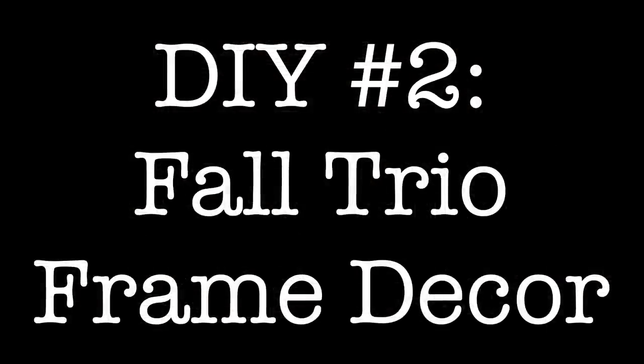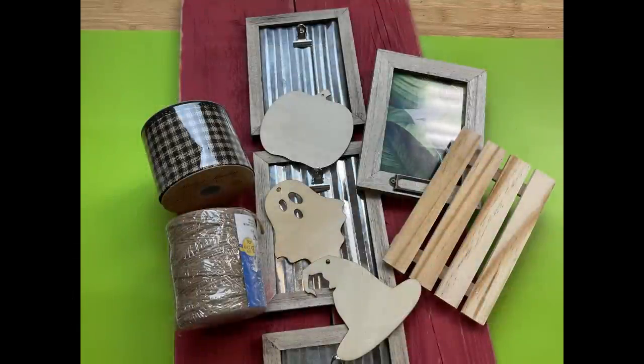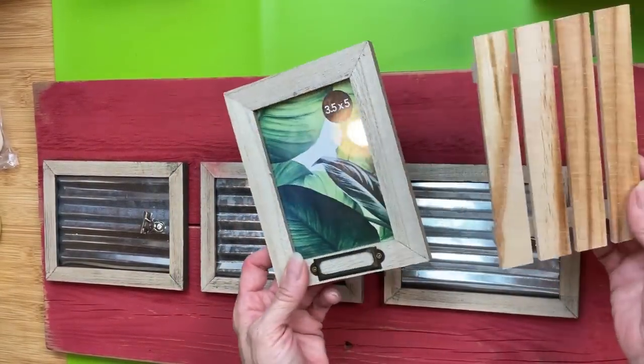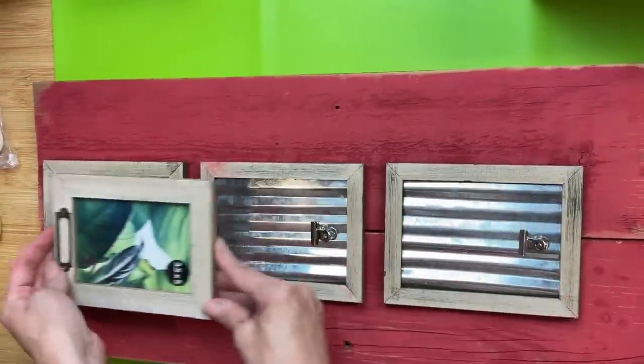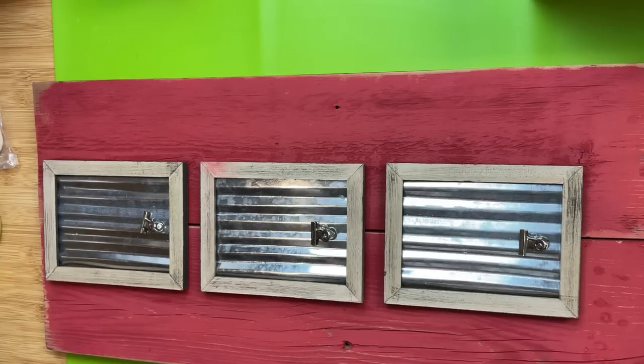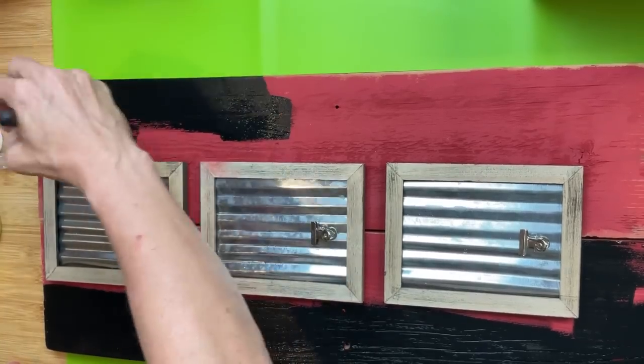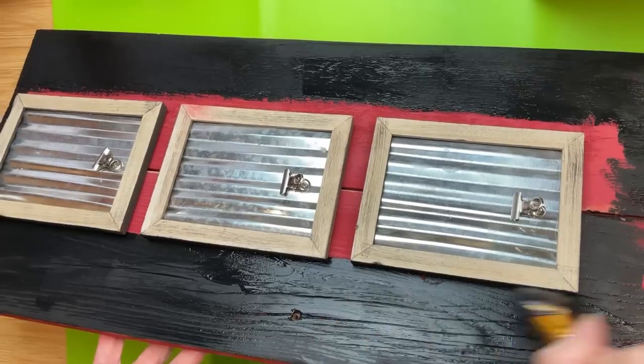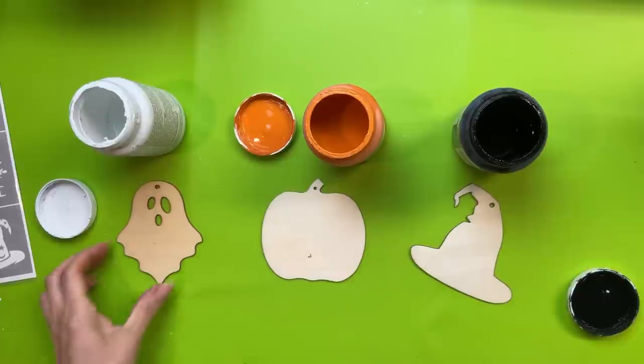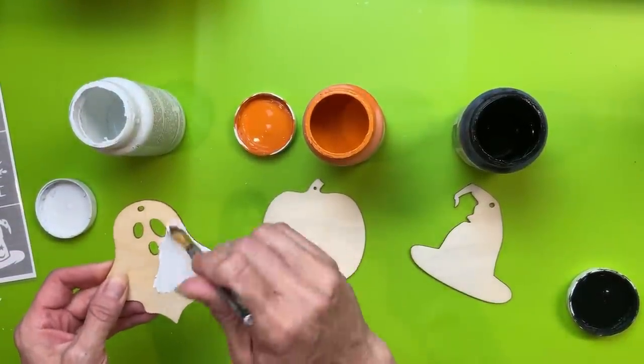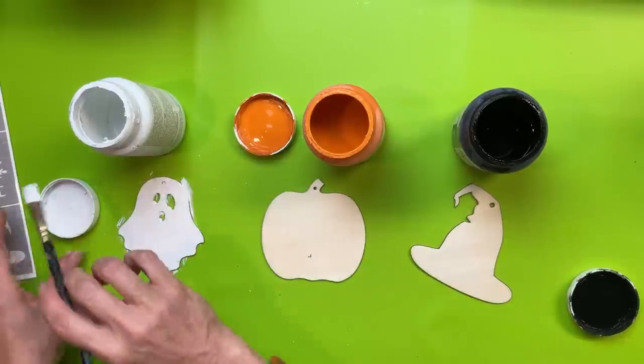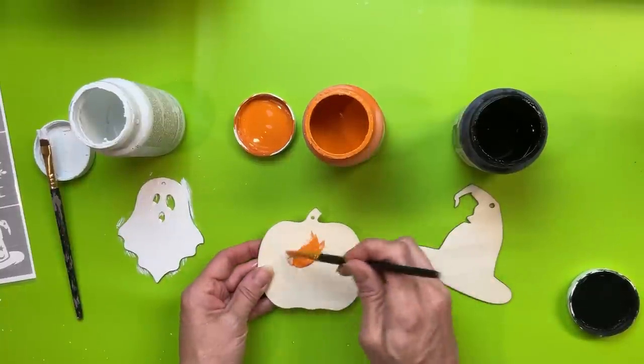For DIY number two, we're going to be making this fall trio frame decor. I have these three clip frames that I've already attached to these two pieces of barn wood, but you could use these mini wood palettes from Dollar Tree or these other frames that have the little brackets. I just like the set of three and I wanted to redo this board for fall. So I'm covering over the red. It was originally a Christmas decor and I'm covering over all of the red with my Waverly chalk paint in ink and I am going to go up on the sides of the frames as well. Then these are the same wood cutouts I used to make my little fall gnome a few weeks back. I'm going to paint one of the ghosts with white, one of the pumpkins with pumpkin, and one of the witch's hats with ink.